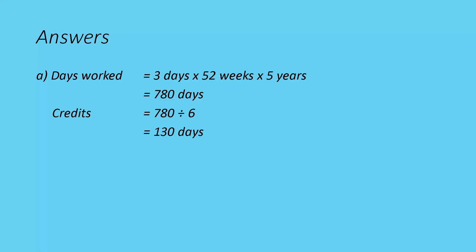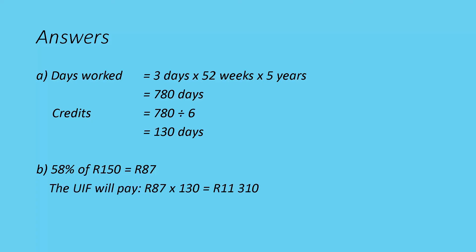130 days. He gets 58% of what he earned, so 58% of 150 rand is 87 rand per day that he'll be able to claim. He has 130 days of credits, so 87 rand multiplied by 130 days means the maximum he'll be able to claim is 11,310 rand from the UIF while he looks for other employment.